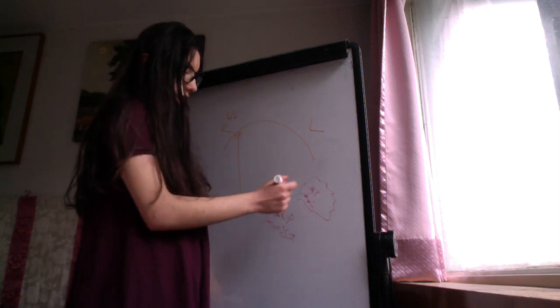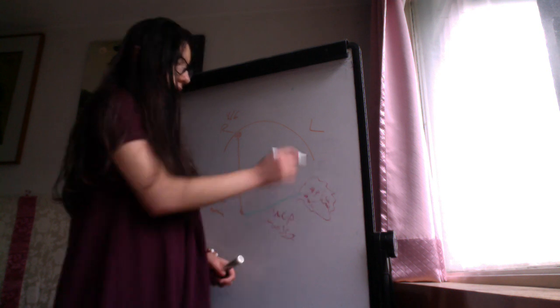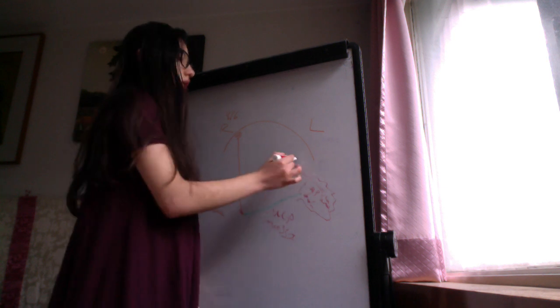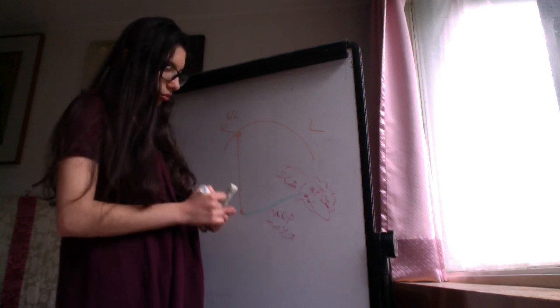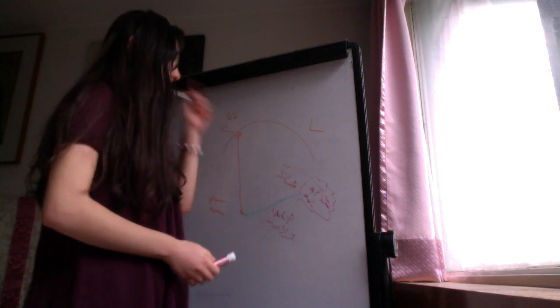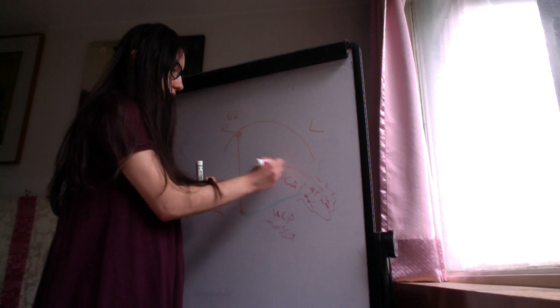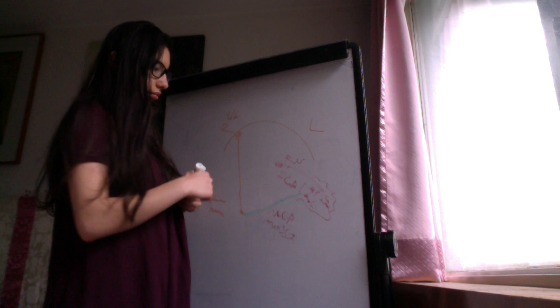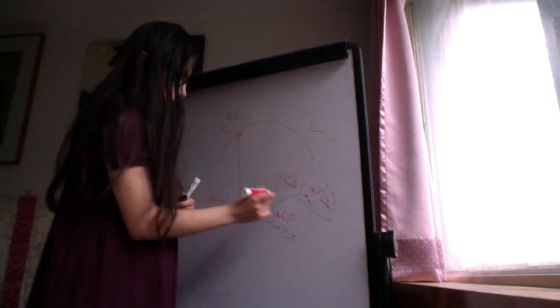These Purkinje cells are on the dentate nuclei. And now they go out through the superior cerebellar peduncle. These are the axons of the Purkinje cells. Now they are going to synapse on the red nuclei of the midbrain. Let me put the red nuclei here.